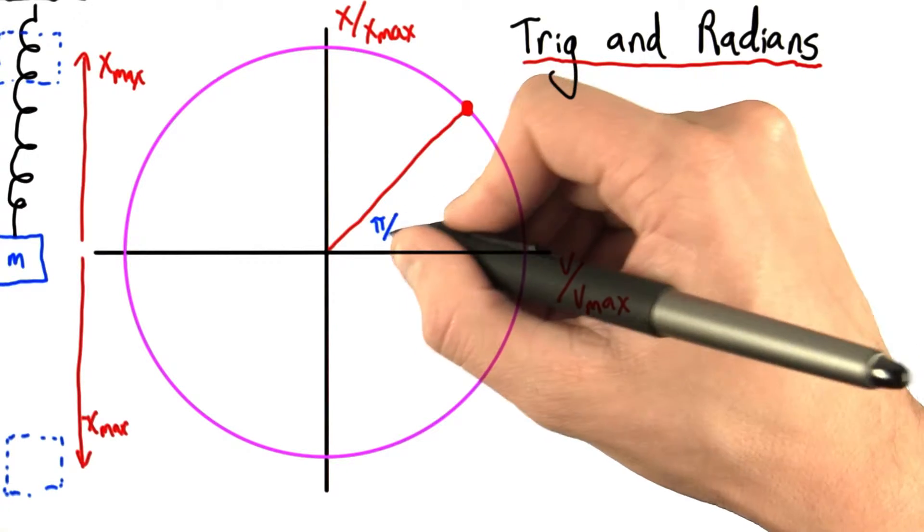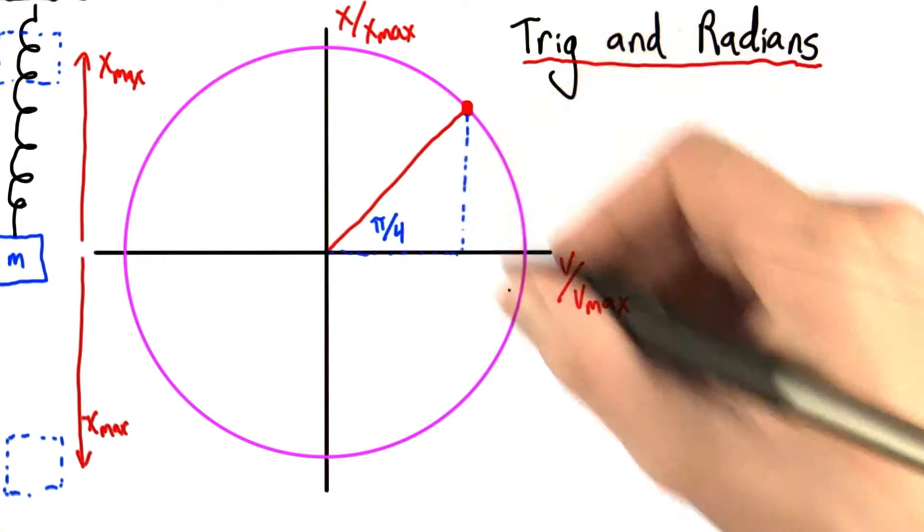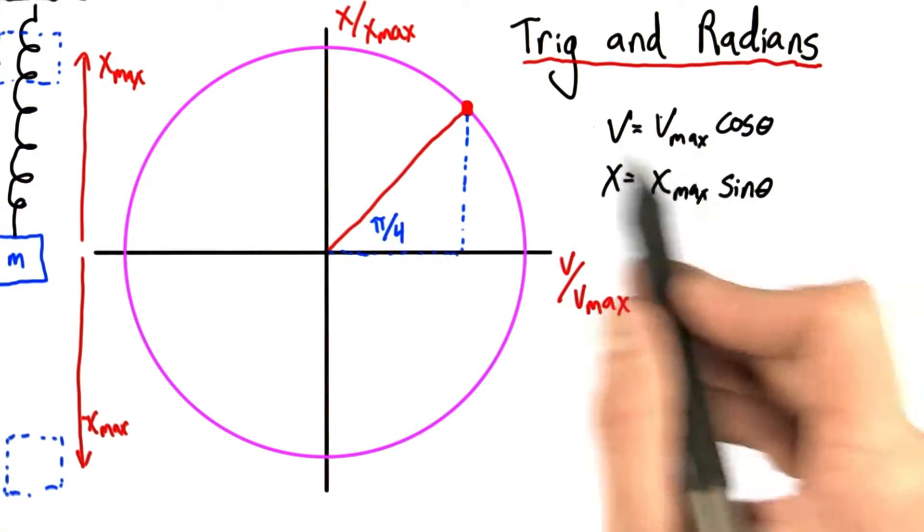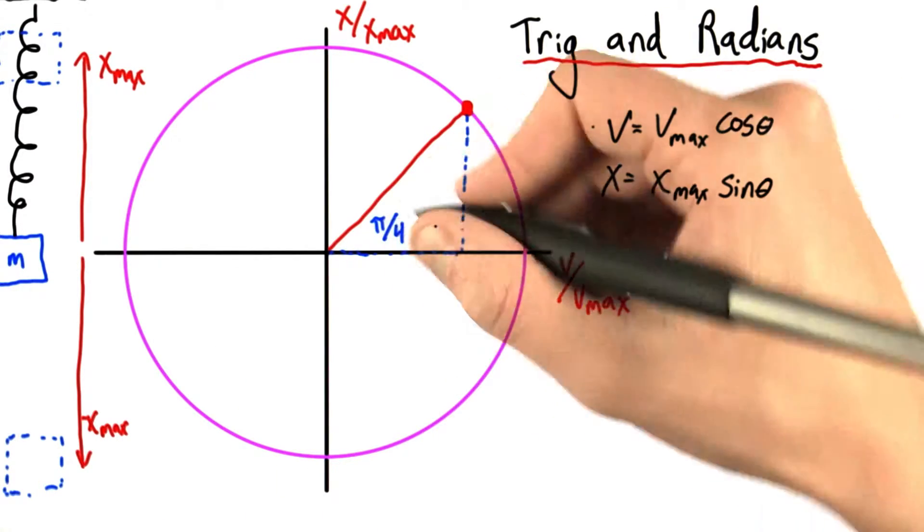So let's say this is an angle, pi over 4 radians. Well, we can draw our right triangle. And in this case, since we've flipped the direction, we're now going vertically. Well, now the cosine goes with the velocity component, and the sine goes with the position. But you could have figured that out from the trigonometry.